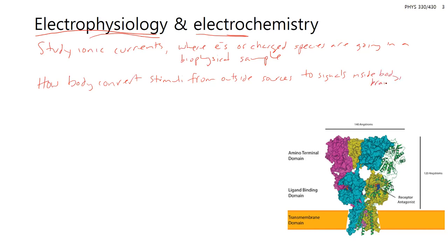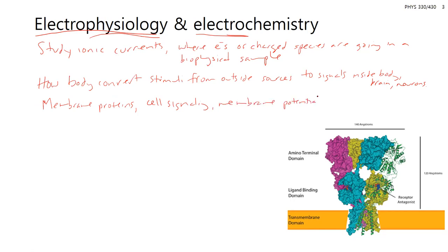A lot of this has to do with the brain, neurons, and signaling. Going from the bottom up, from small molecules to larger samples, this concerns membrane proteins, cell signaling, and membrane potentials. This can even scale to how one cell that receives a signal interacts with its neighbors — which would be termed systems biology.